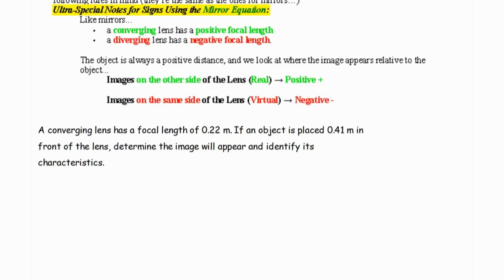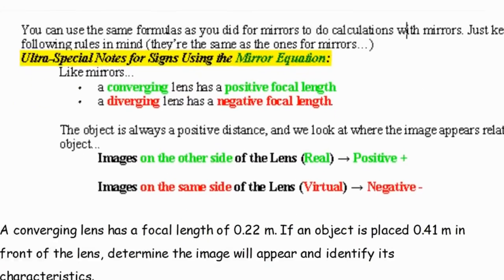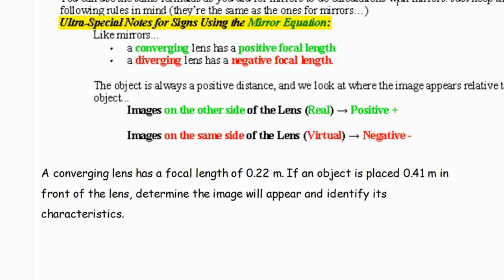For converging and diverging lenses, the formulas are the same as for mirrors. Lenses that move light towards the focus have a positive focal length. Lenses that cause light rays to diverge have a negative focal length. Those sign conventions are important in the calculations as well.